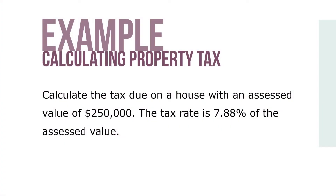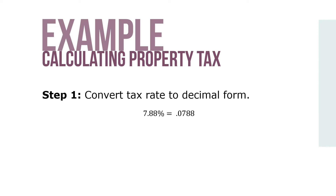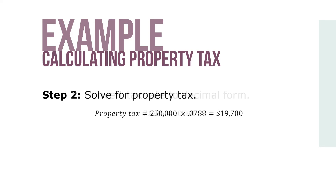Here's an example. Calculate the tax due on a house with an assessed value of $250,000. The tax rate is 7.88% of the assessed value. Step 1: Convert the tax rate to decimal form, where 7.88% equals 0.0788. Step 2: Solve for the property tax, where property tax equals $250,000 times 0.0788, which equals $19,700.